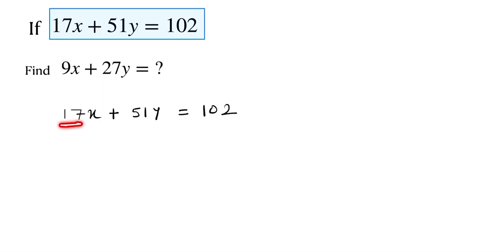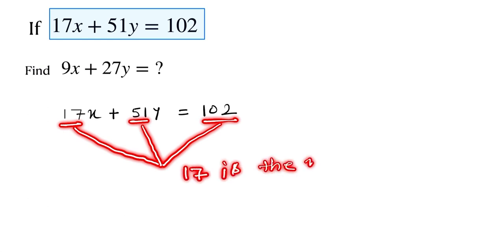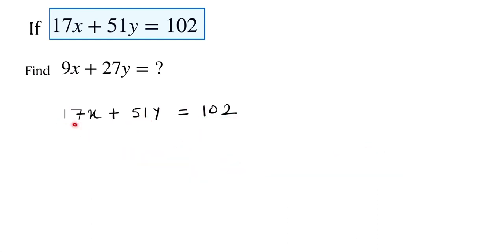Here, this one is 17 and 51 and 102. These all are multiples of 17. This equation can be written by dividing all by 17. So this is x plus 3y is equal to 6.